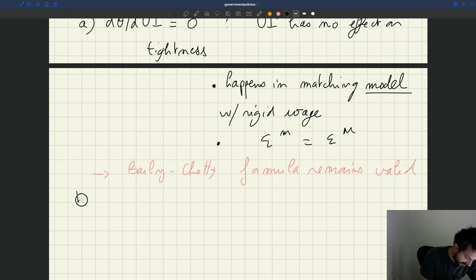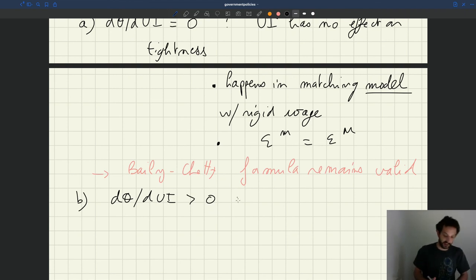What's the second possibility? The second possibility is that dθ/dUI is positive. That is, when you increase UI, you also increase tightness.